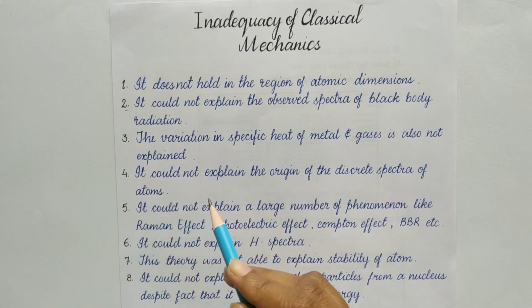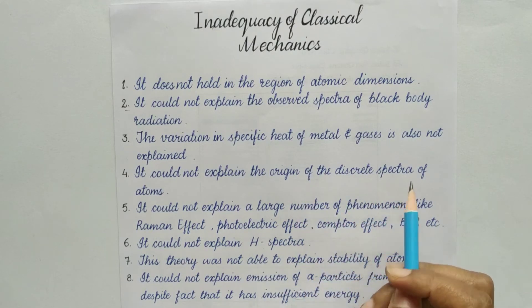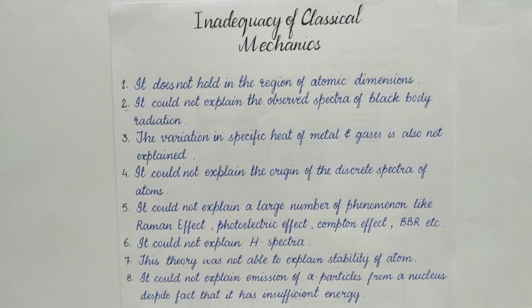Number four, it could not explain the origin of the discrete spectra of atoms. This is so because according to classical mechanics, the energy changes are always continuous. But after further studies, we saw that spectra is discrete means it was having different intensity at different places. Like somewhere the intensity was high, somewhere it was low. So, the variation in the intensity of energy level and the reason that why we get discrete spectra was also not explained by classical mechanics.